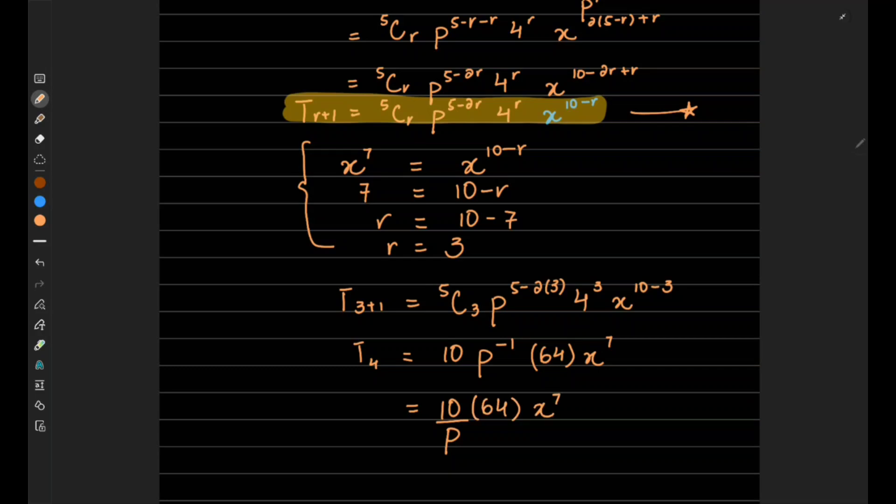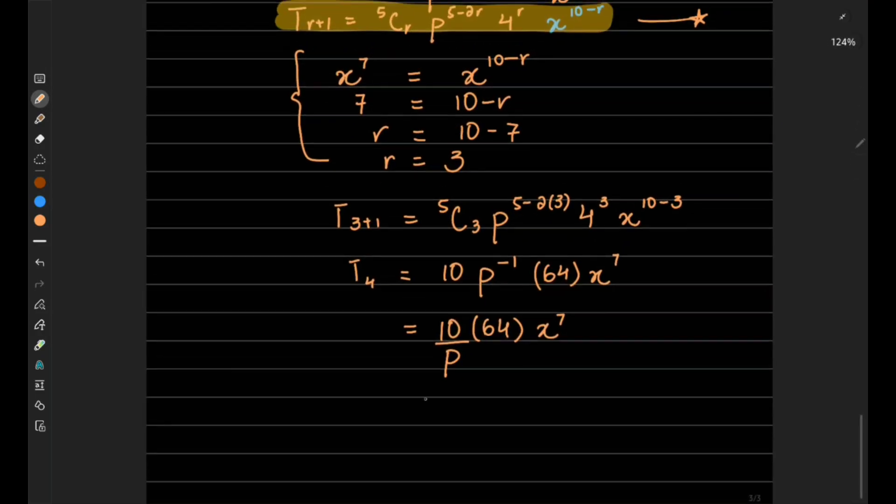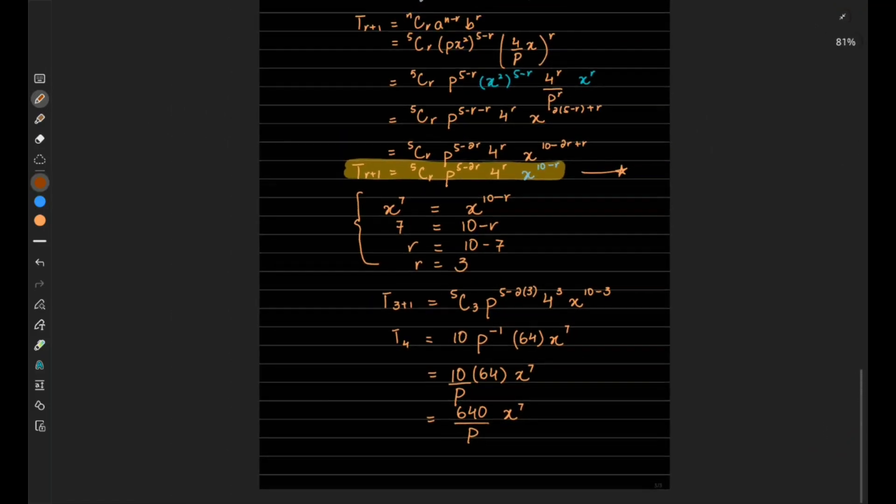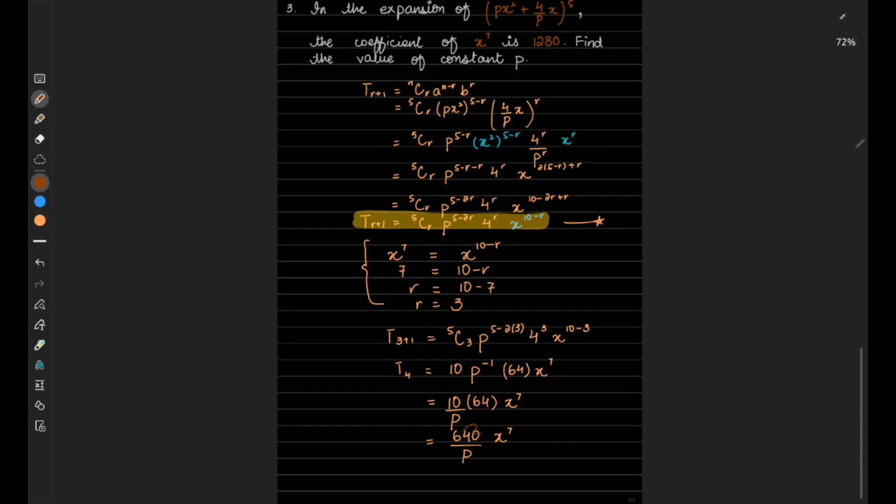And 10 times 64 would be 640/p x^7. So what did we have in the start? We had that the coefficient of x^7 is 1280, and find the value of p. So we have to equate 1280 with this.